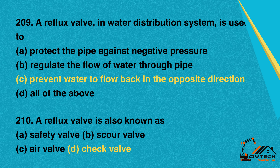Question 209: A reflux valve in a water distribution system is used to. A. Protect the pipe against negative pressure. B. Regulate the flow of water through pipe. C. Prevent water to flow back in the opposite direction. D. All of the above. Correct option: C. Prevent water to flow back in the opposite direction.